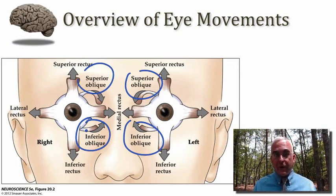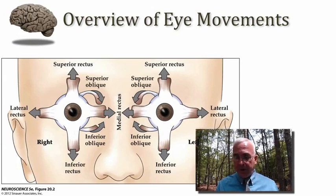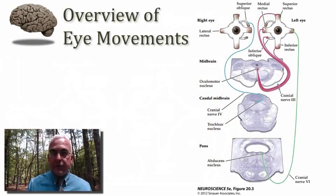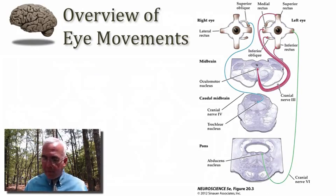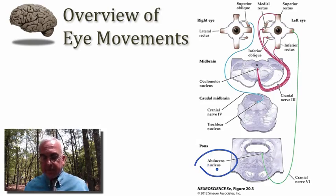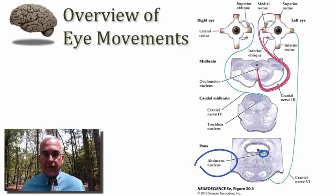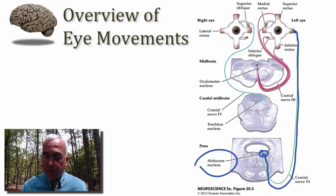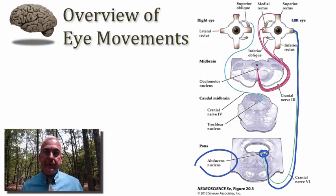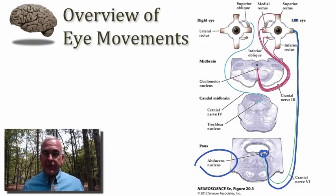These six pairs of extraocular muscles are innervated by three pairs of cranial nerves. Two of the nerves do just one muscle each, and then the third nerve does the remaining four. Beginning from the caudal end of the brain stem: the abducens nucleus, a somatic motor nucleus along the dorsal margin of the tegmentum near the midline of the caudal pons, grows out an axon from its motor neurons that innervates the lateral rectus muscle. So the abducens nucleus abducts the eye — pulls the eye to the lateral side via the action of the lateral rectus.